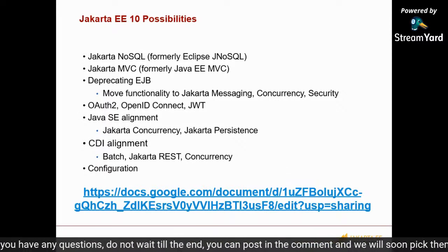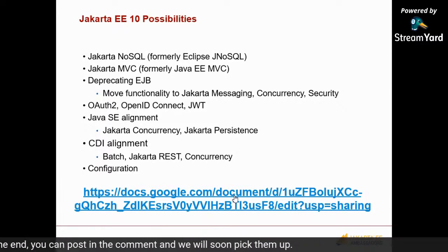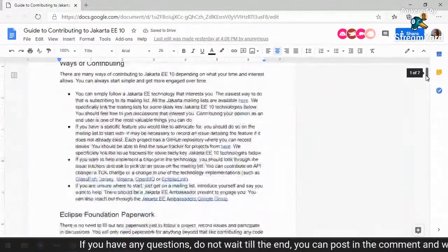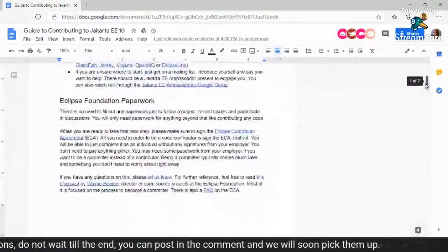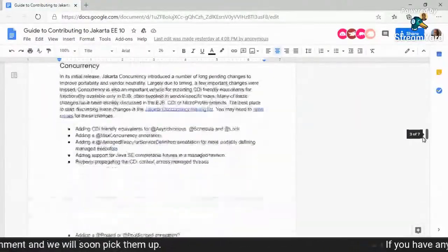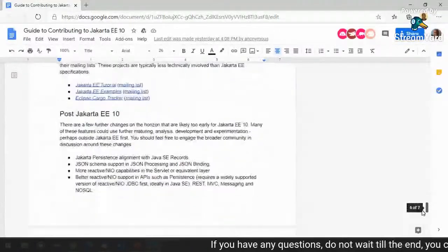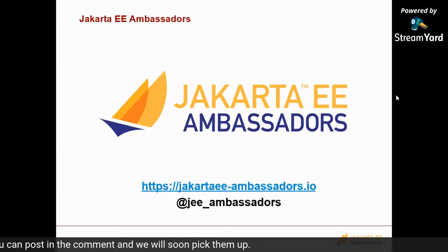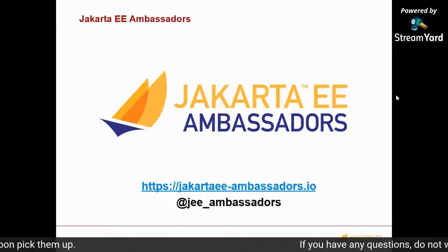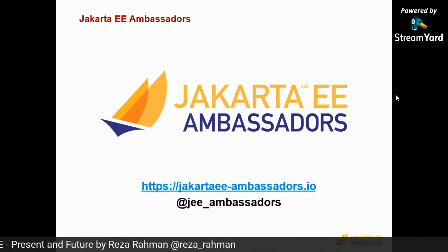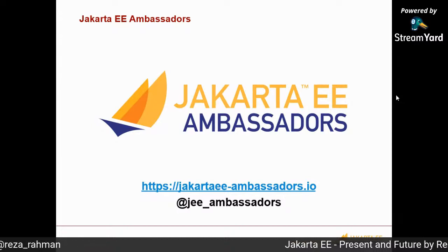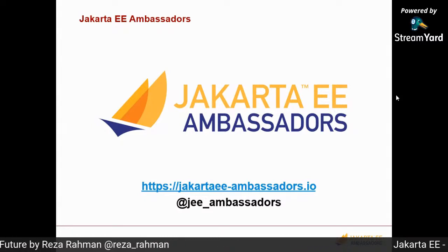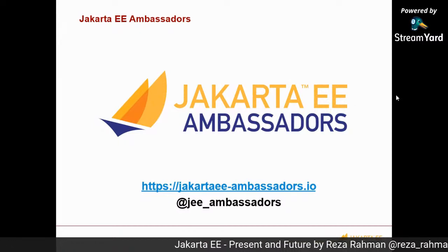The Jakarta EE Ambassadors have created a draft document listing features that could potentially be implemented in Jakarta EE10, serving as a guide for how end users can contribute. Ambassadors do things like blogging, speaking, contributing to specifications, and helping other people contribute. Anyone can become a Jakarta EE Ambassador — you just need to log onto the website, see how to join up, and begin engaging and contributing to something very important to the entire industry.